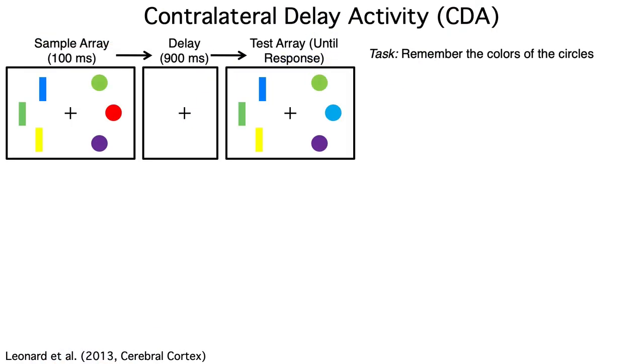In this task, subjects are asked to remember the colors of the circles and ignore the rectangles. They only have to remember the colors for about a second, and then they see a test array. They then indicate whether the colors of any of the circles have changed. In this example, the red circle changed to blue. The rectangles never change color.